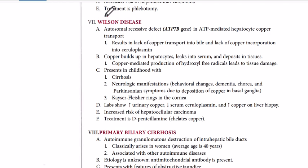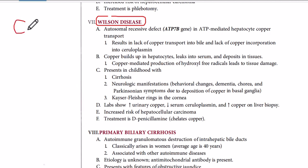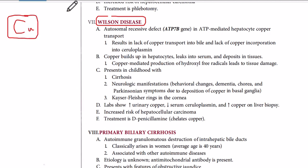In this video we will study about Wilson disease. Wilson disease is a disease in which we have excessive accumulation of copper in the different tissues of the body — we have excess of copper in the body.